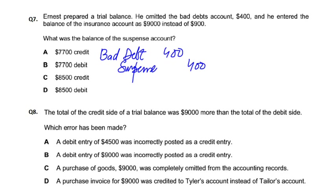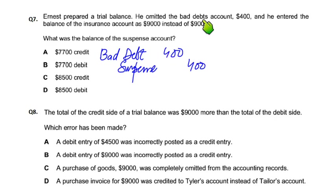Omitted bad debt account — bad debt didn't record the debtor, it will record the debtor. And after that, the second error: the insurance account balance was entered as $9,000 instead of $900.